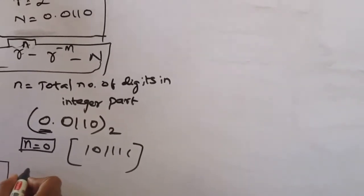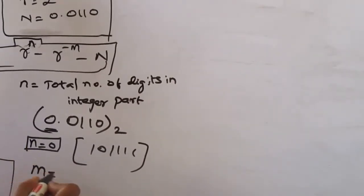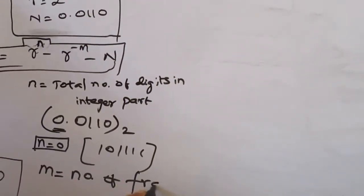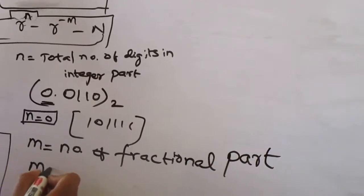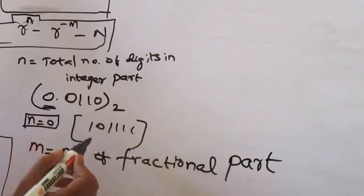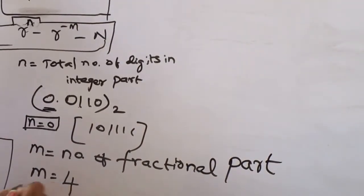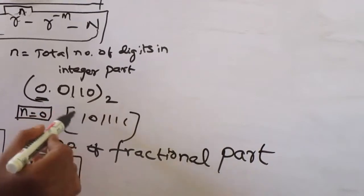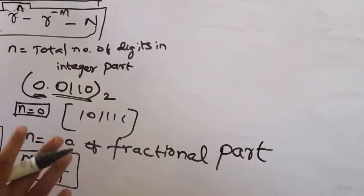Then m — I told you about m is equal to 0 in the previous class for the integer part of a binary number. Here m refers to the number of fractional digits. The number given is 0.0110, and the fractional part is 0, 1, 1, 0 — that is 4 digits. So the number of fractional part is 4, meaning m is equal to 4.